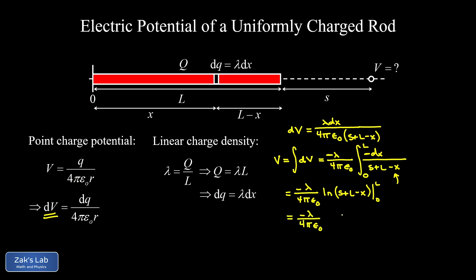Now subbing in the upper and lower limits, when I sub in the upper limit, I get an S plus L minus L in there. So I get just the natural log of S. And then when I sub in the lower limit, that's when x is equal to 0, I get a natural log of S plus L.